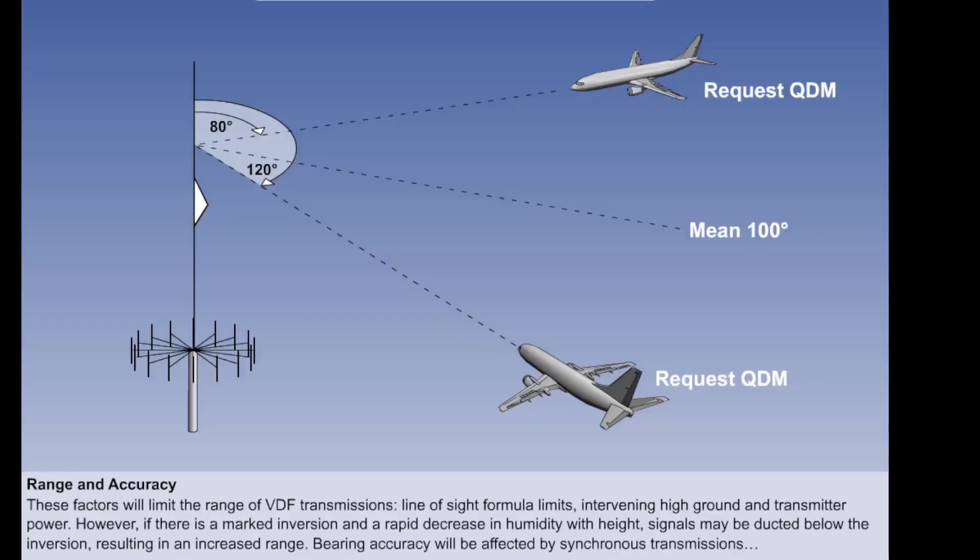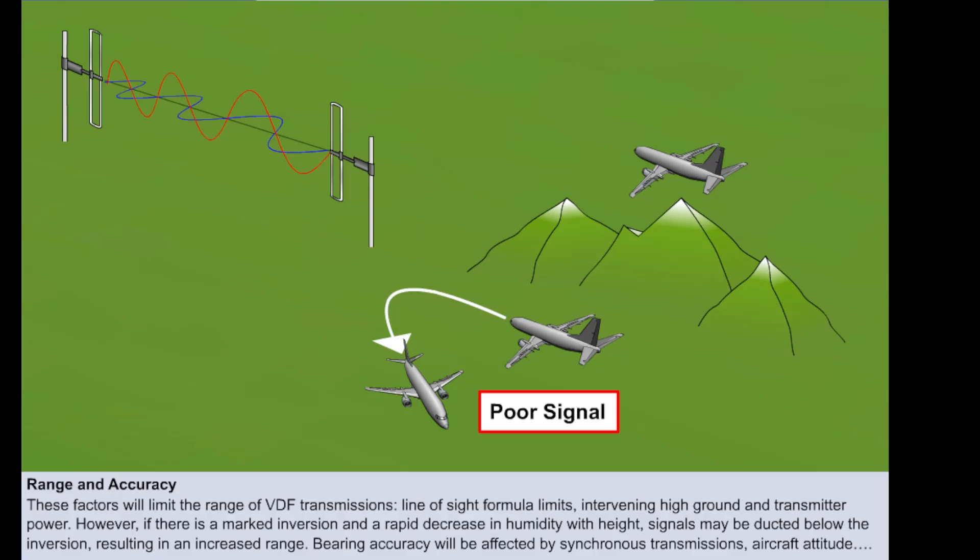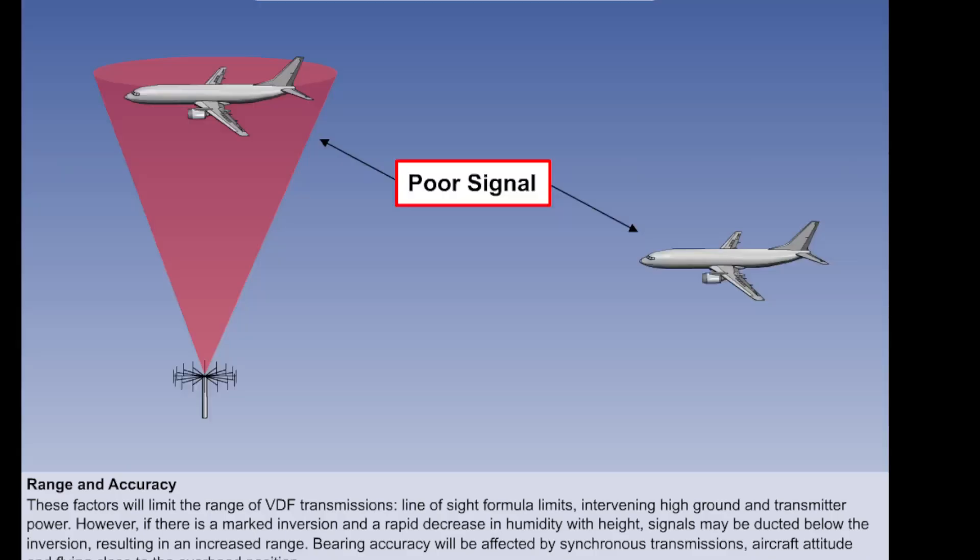Several factors will affect the accuracy of the bearing. Synchronous transmissions by two or more aircraft will result in a bearing accuracy somewhere between the values for each aircraft. As VHF waves are vertically polarized, the aircraft should fly straight and level to produce the best signal. Accuracy will also be poor at low level or nearer position overhead the ADCOC antenna.